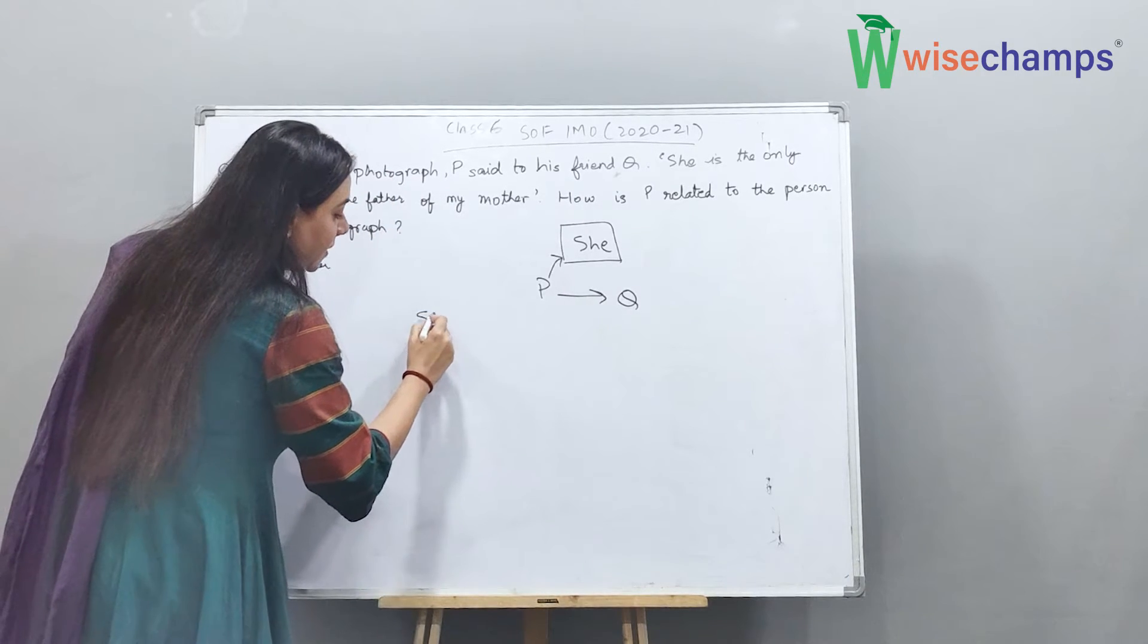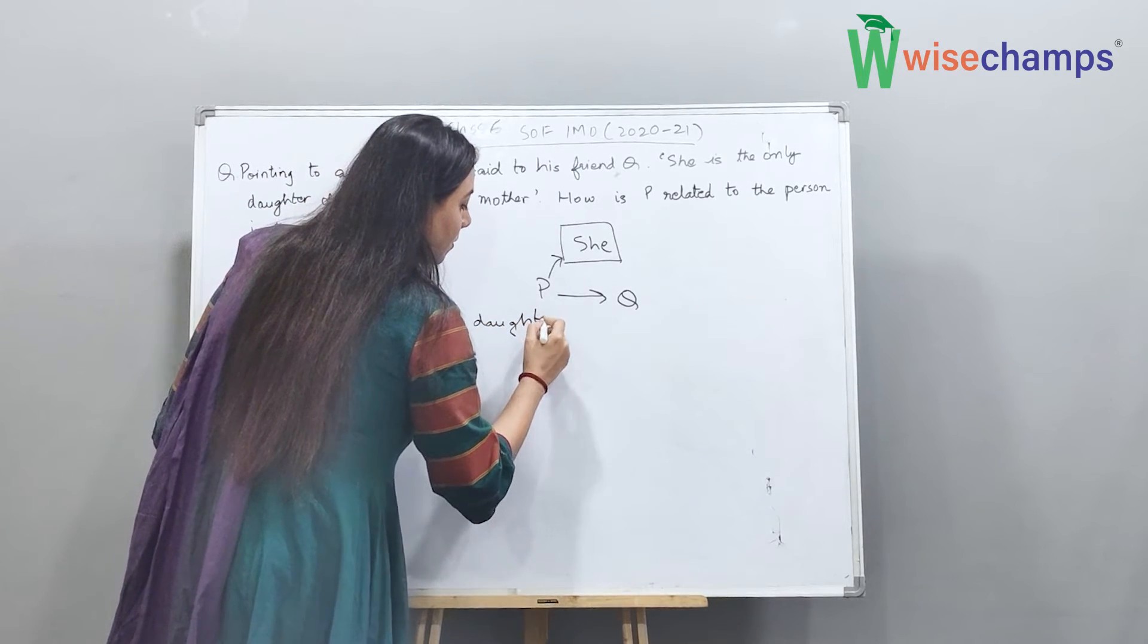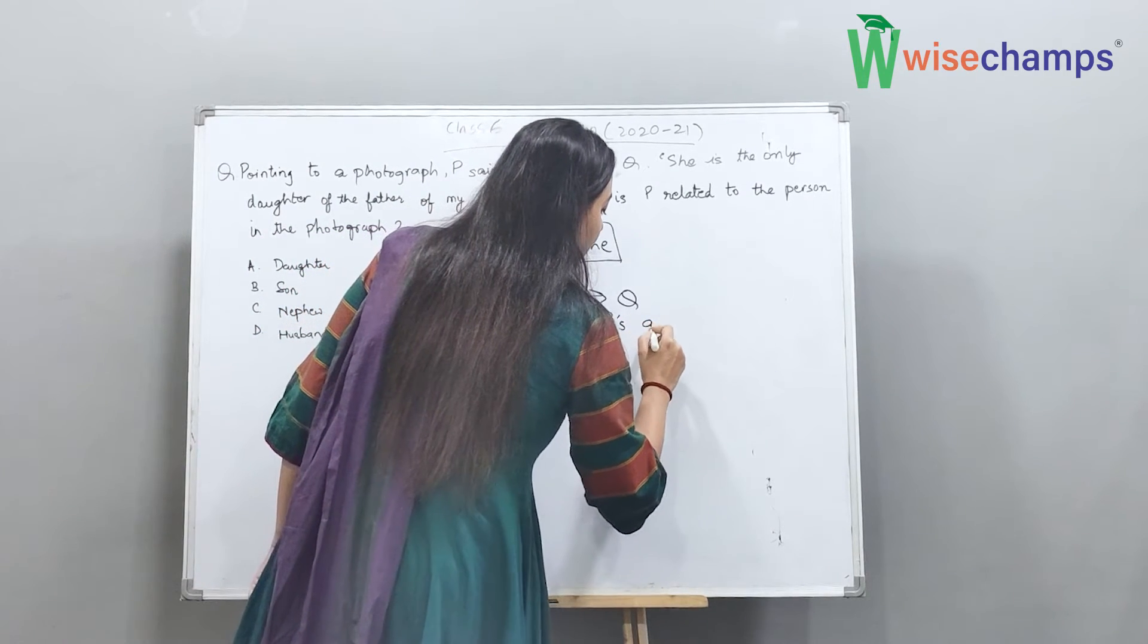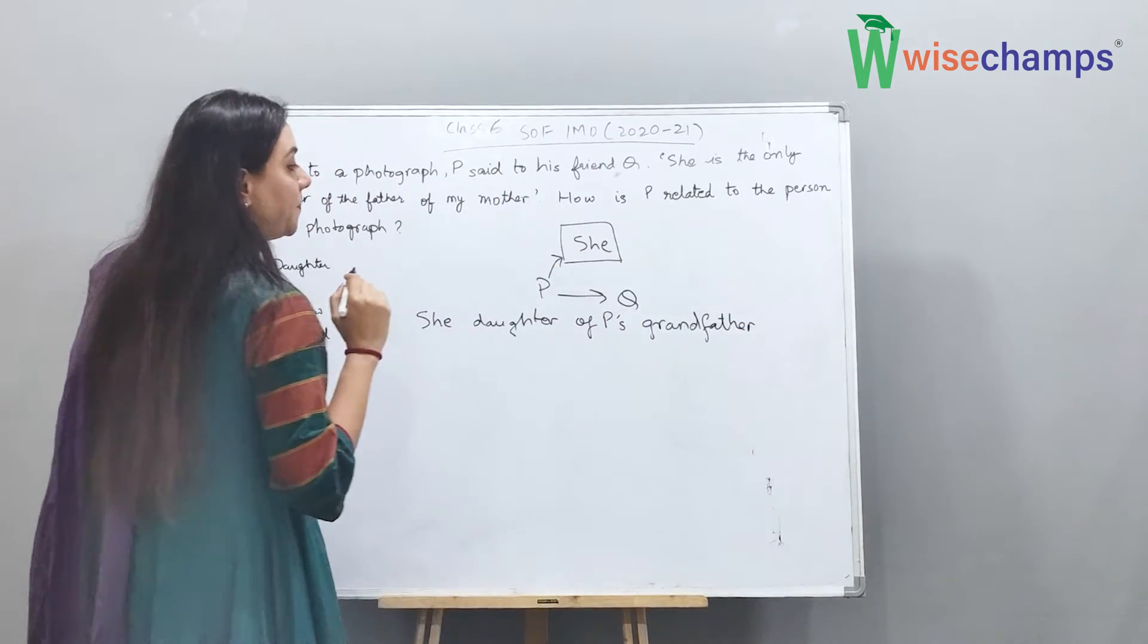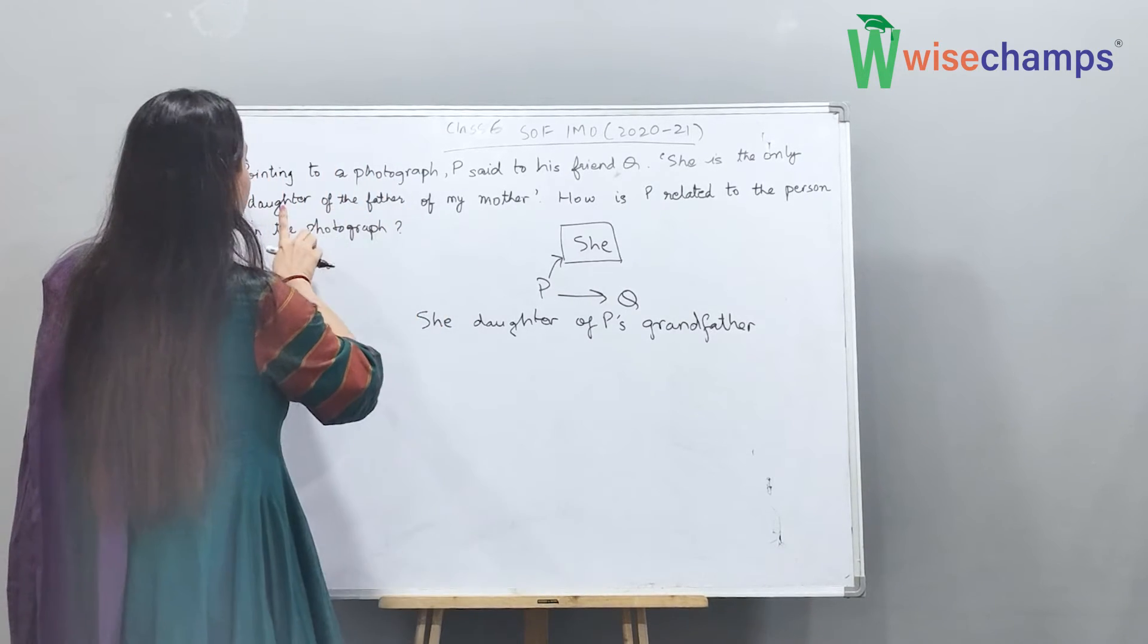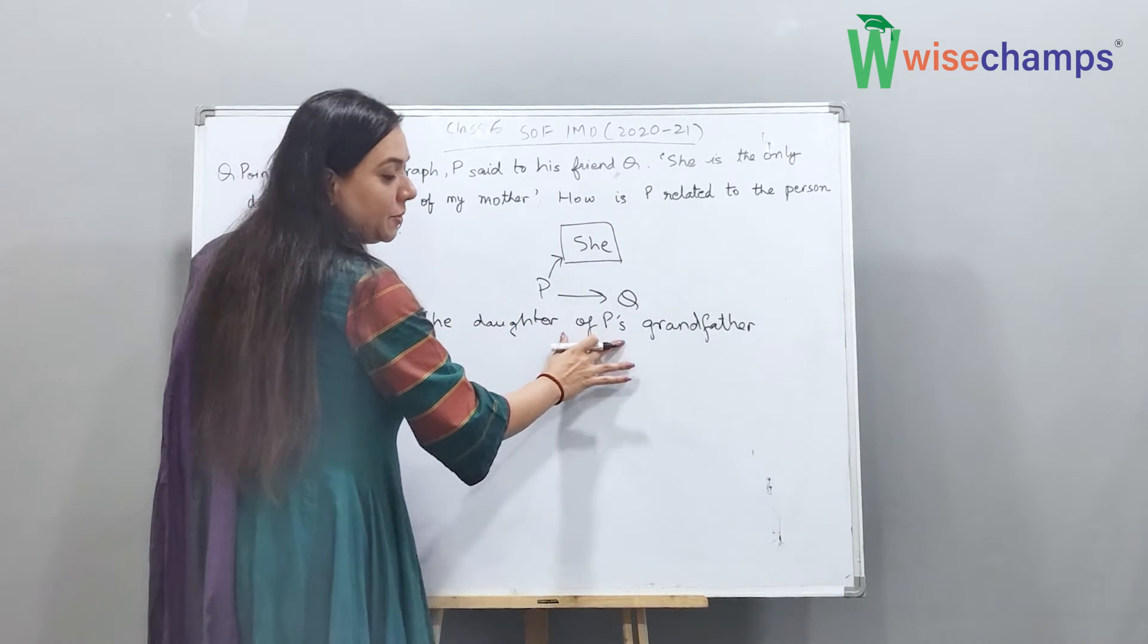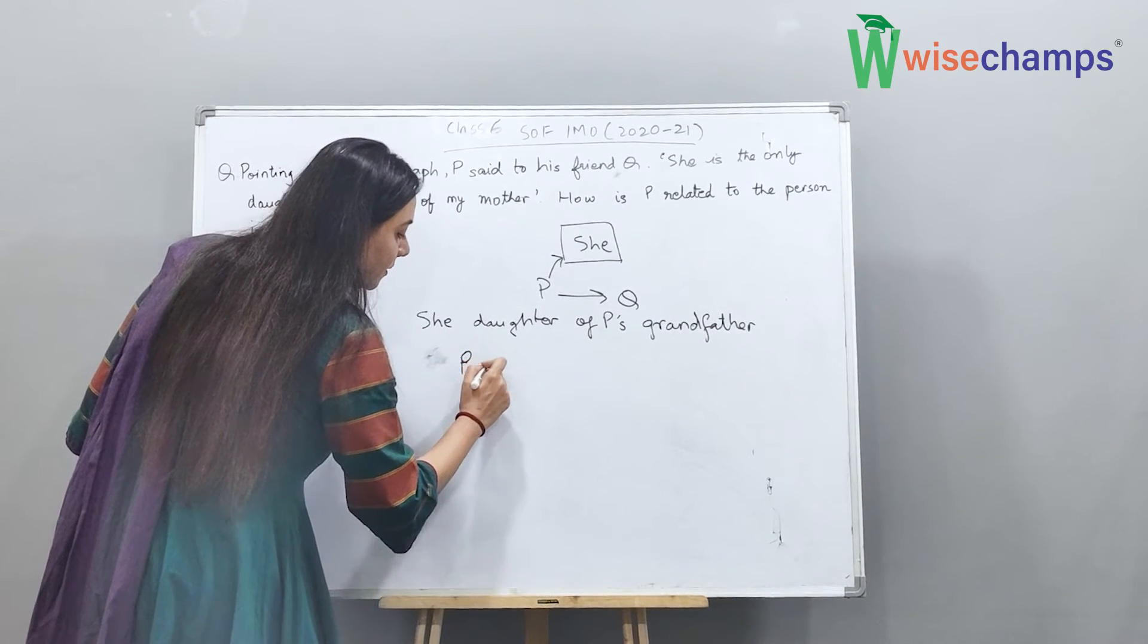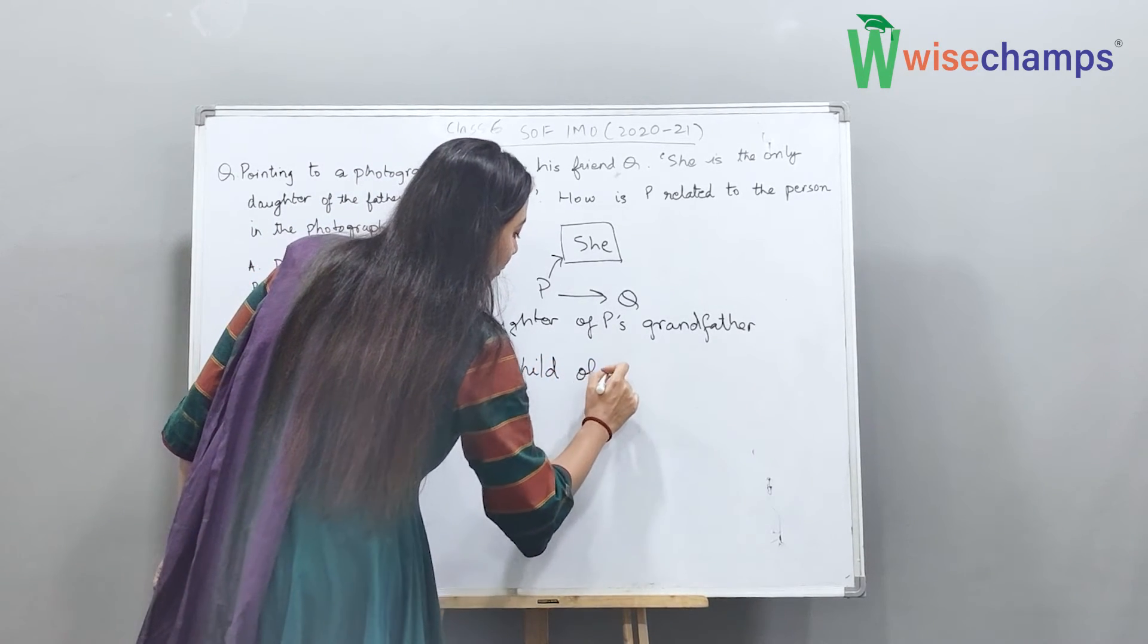Now that means she is the daughter of P's grandfather. So she is the daughter of P's grandfather. This tells us that P is child of she.